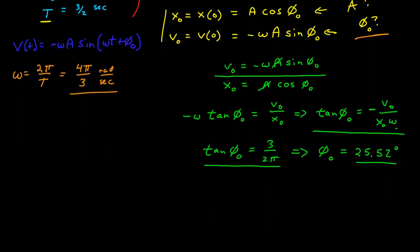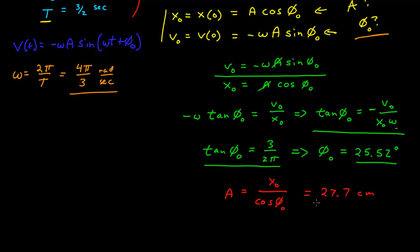Now I can go back and find the amplitude. Amplitude equals x₀ over cosine of phi naught. I know all these values, and I calculate 27.7 centimeters. And I think I must be done — but my strategy tells me that once I get to an end, I should check my result. So let's go ahead and check this.